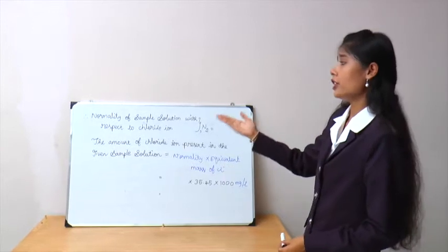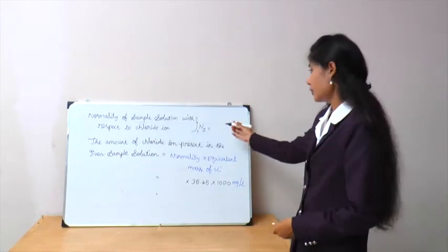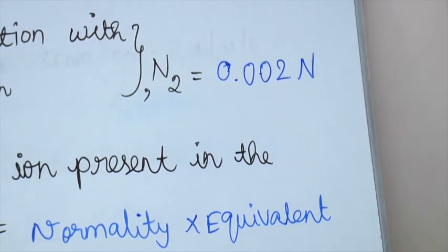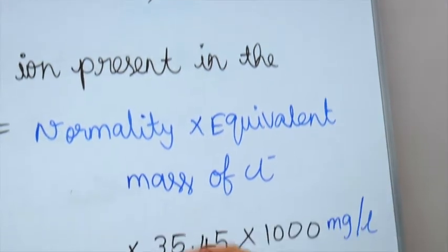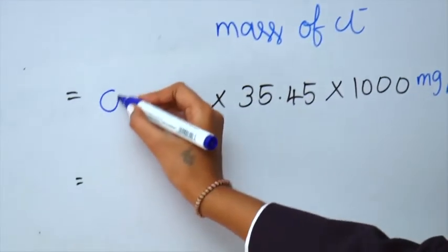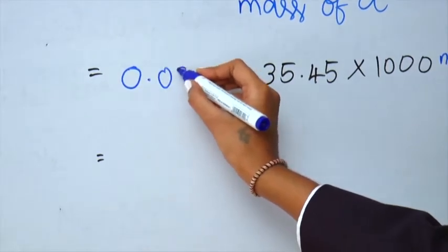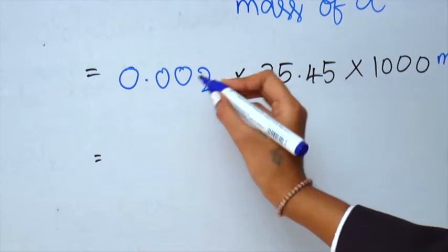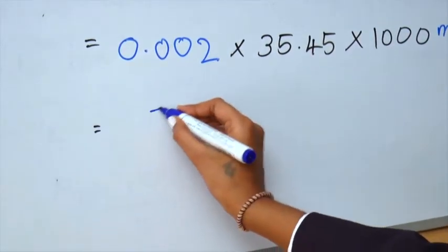The normality of the sample solution with respect to the chloride ion, N2, is equal to 0.002 N. The amount of chloride ion present in the given sample solution is equal to normality multiplied by the equivalent mass of the chloride ion, that is 0.002 into 35.45 into 1000 mg per litre.